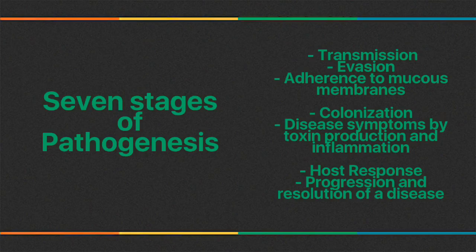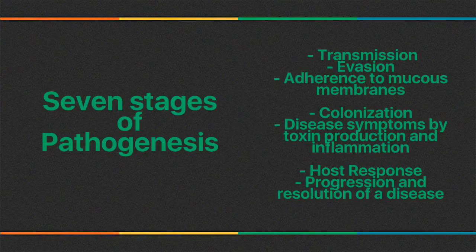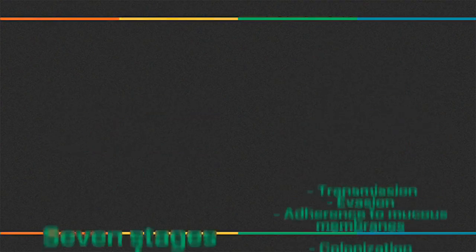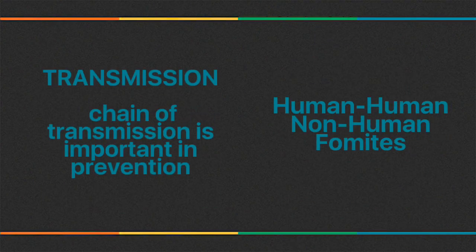There are seven stages of pathogenesis: transmission, evasion, adherence to mucous membrane, colonization, disease symptoms caused by toxin production and inflammation, host response, and progression and resolution of disease. We'll talk more about each as we progress.